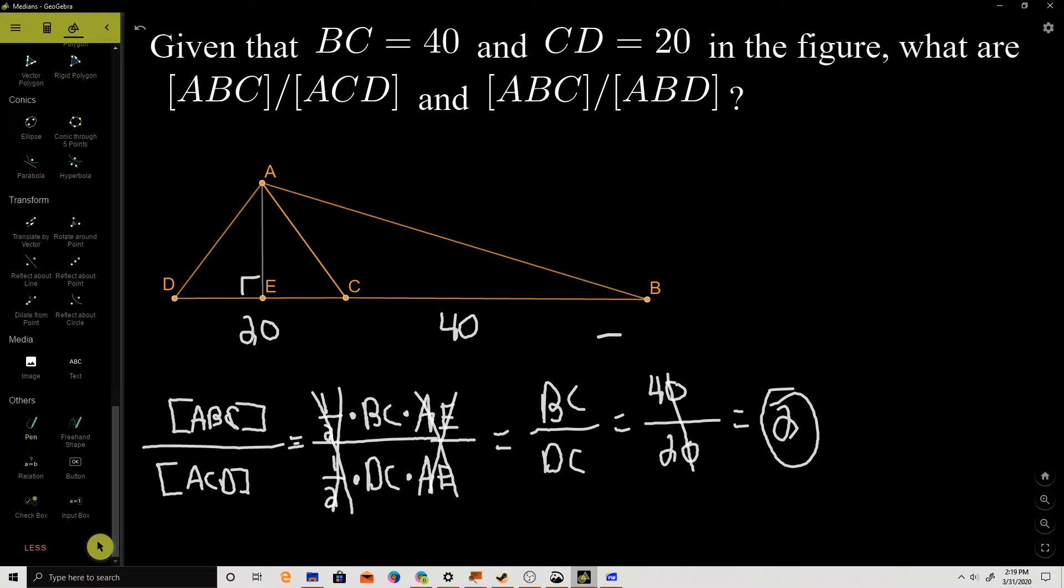With that done, let's move on to the next ratio. The area of ABC over the area of ABD. Setup is very similar. I already know what the area of ABC is going to amount to: one-half times BC times AE. Now I just need to express the area of ABD.